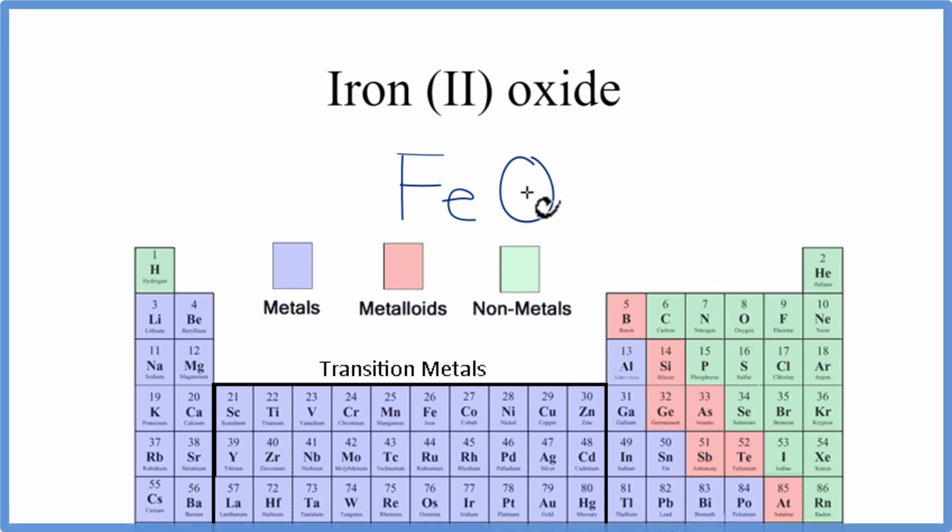Since iron's a metal and oxygen's a nonmetal, we have an ionic compound and we need to take into account the charges on each of these ions when we write the formula.